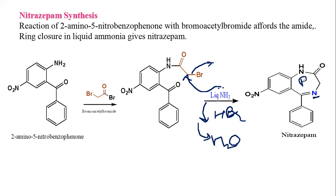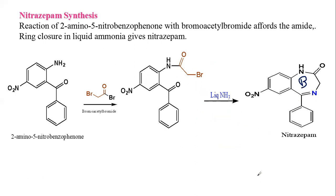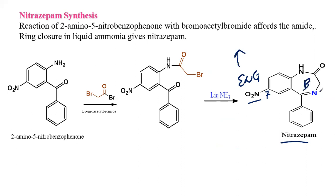After ring closure, we obtain the final structure of nitrazepam. The nitro group is at C7, which is an electron-withdrawing group. As per SAR, the presence of an electron-withdrawing group increases activity as electronegativity increases. Ring B is the seven-membered diazepinone ring. Nitrazepam is a representative example from the benzodiazepine category of sedatives and hypnotics.